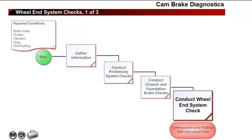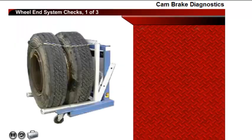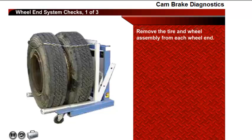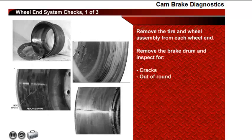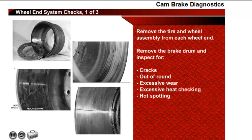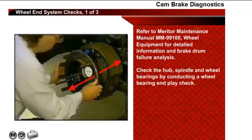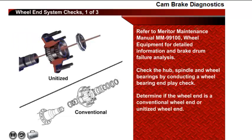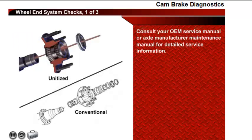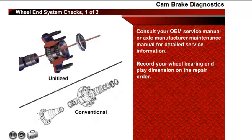The next step within the diagnostic process is to complete the wheel end system checks. Once the chassis and external brake inspection is complete, remove the tire and wheel assembly from each wheel end. Remove the brake drum and inspect for cracks, out of round, excessive wear, excessive heat checking, hot spotting, glazing, bluing, scoring, and oil or grease penetration. Refer to Meritor Maintenance Manual 99100, Wheel Equipment, for detailed information and brake drum failure analysis. Check the hub, spindle, and wheel bearings by conducting a wheel bearing end play check. Determine if the wheel end is a conventional or unitized wheel end. Consult your OEM Service Manual or Axle Manufacturer Maintenance Manual for detailed service information and record your wheel bearing end play dimension on the repair order.